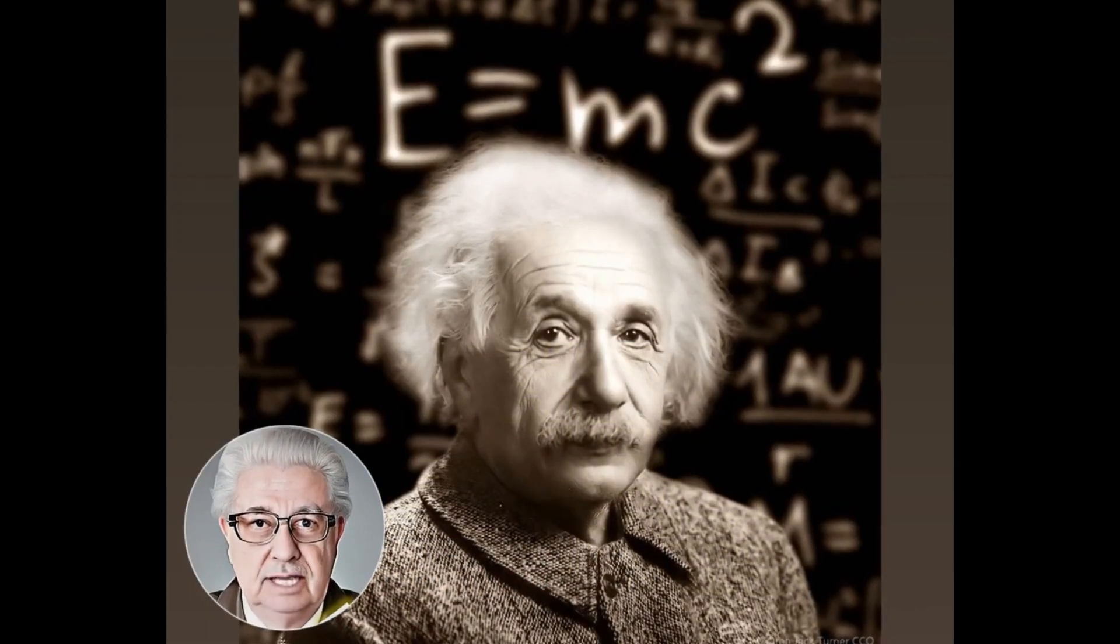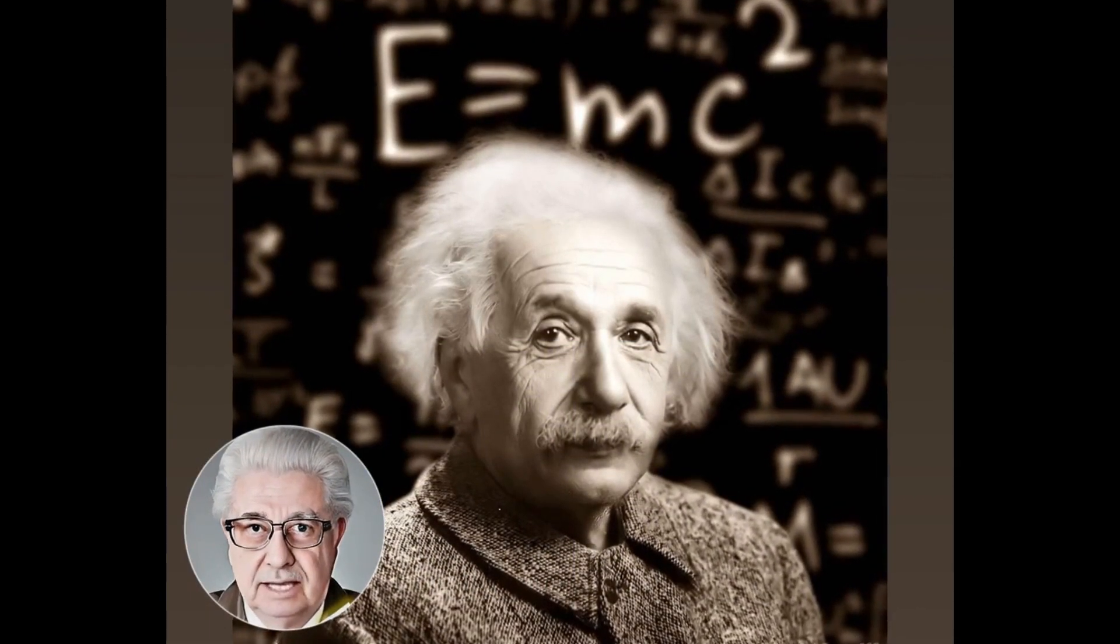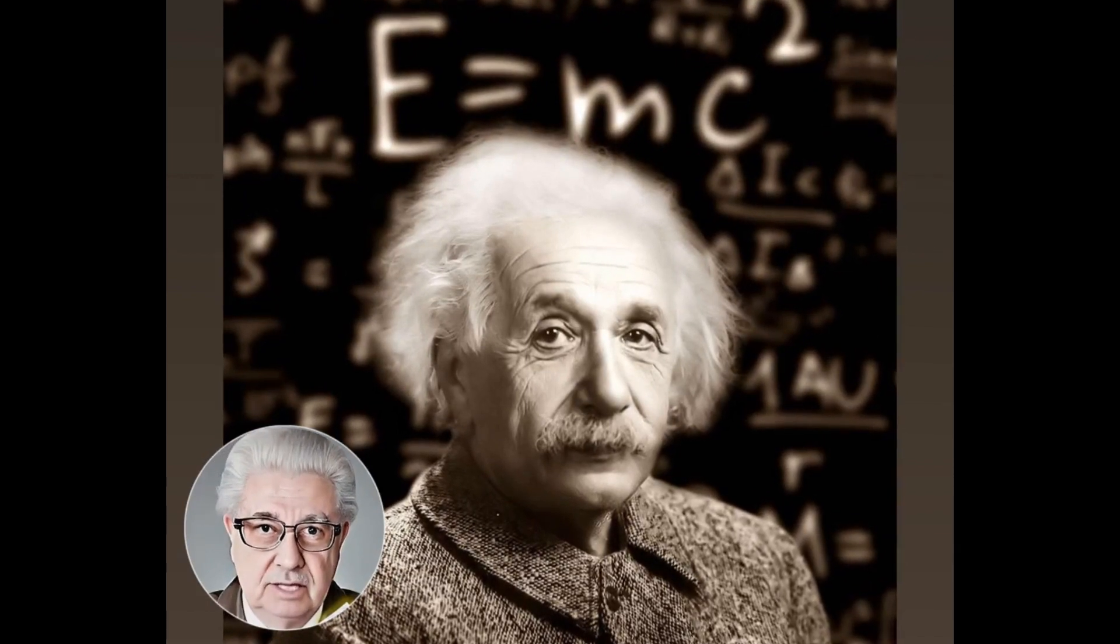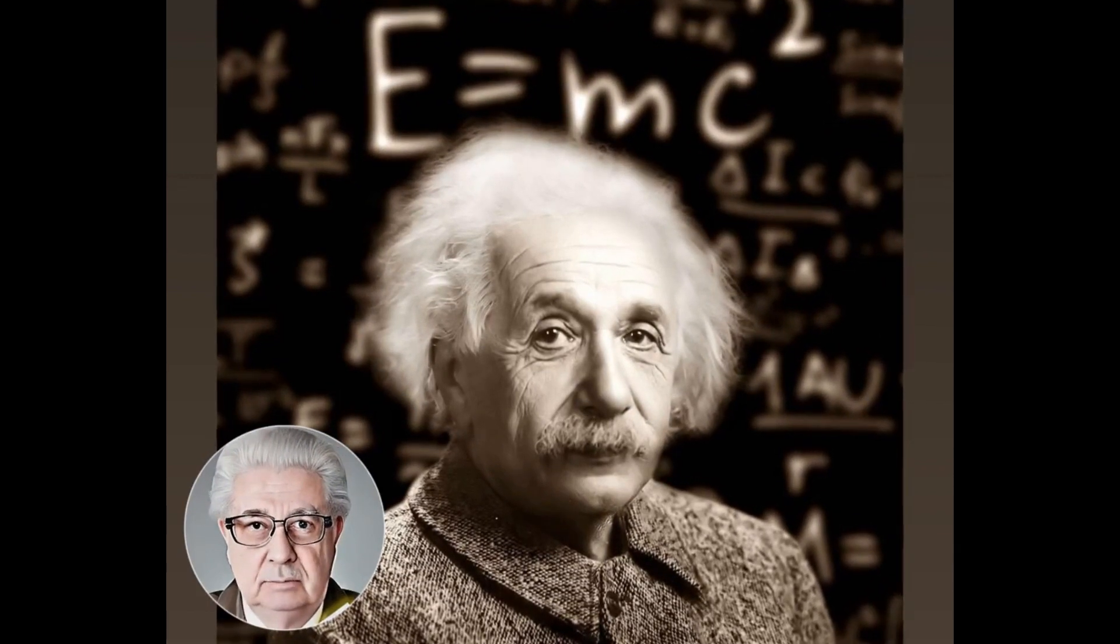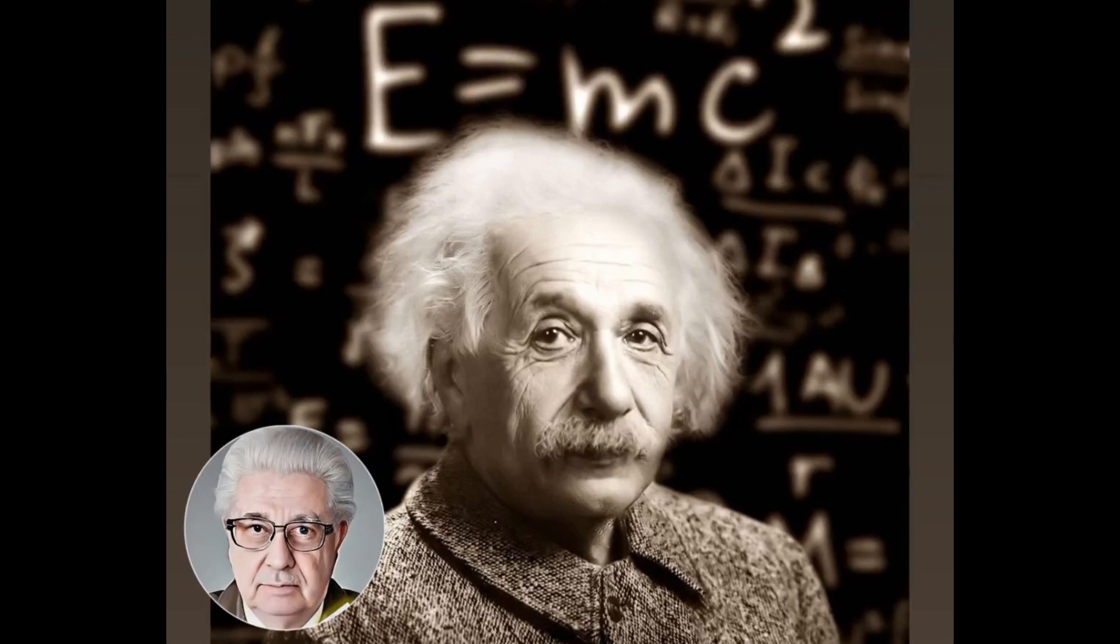Very soon, we will continue with part 4 of this Einstein writing. Final step: how did Einstein arrive at the compact equation E equals mass times the speed of light squared. We will see the conclusion very soon. Bye my dear friends.